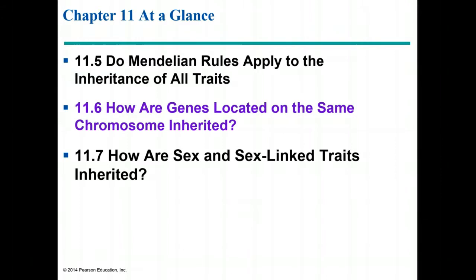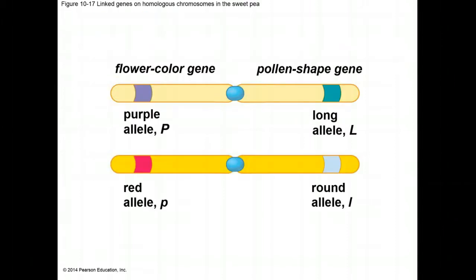Now let's look at how genes located on the same chromosome are inherited. Genes on the same chromosome tend to be inherited together. Mendel's law of independent assortment works only for genes whose loci are on different pairs of homologous chromosomes. Alleles on the same chromosome do not line up independently on the metaphase plate and are not separated at anaphase one. Genes on the same chromosome tend to be inherited together — this phenomenon is called a linkage group. An example is flower color and pollen shape in sweet peas, which are located on the same chromosome very close to each other.